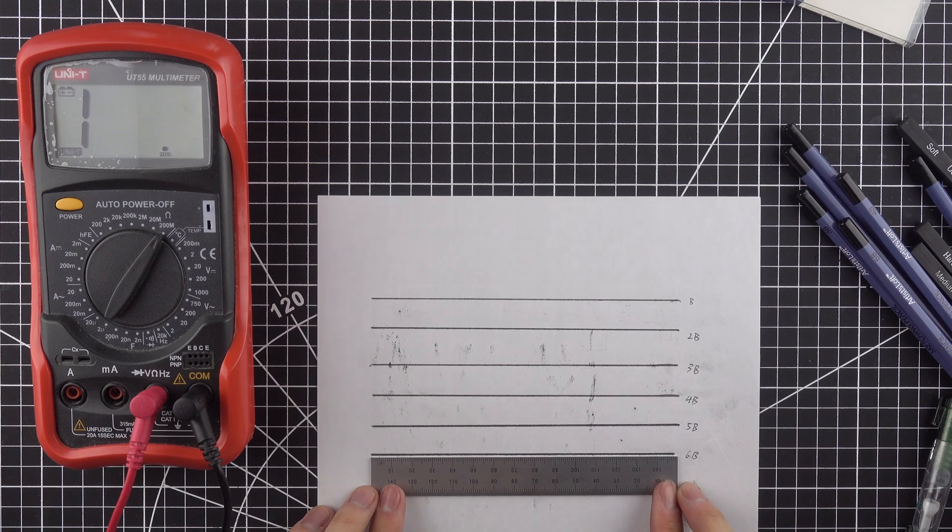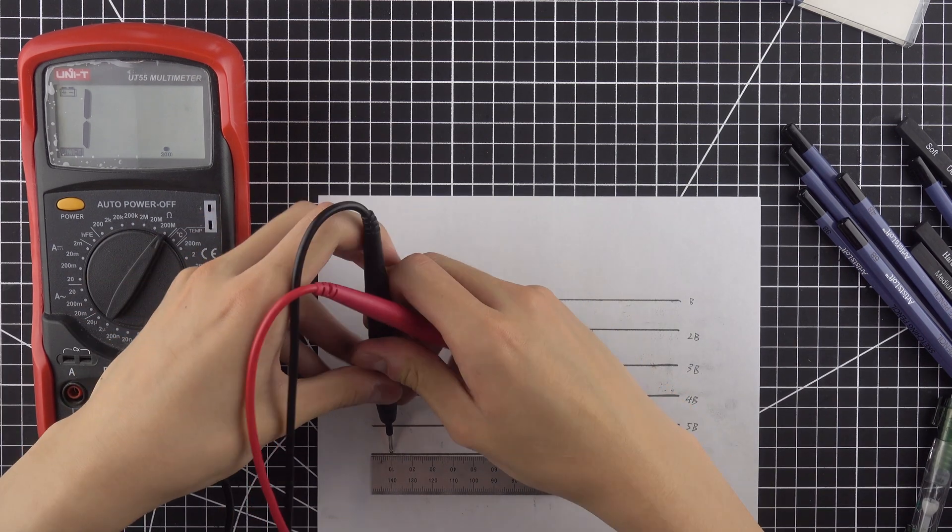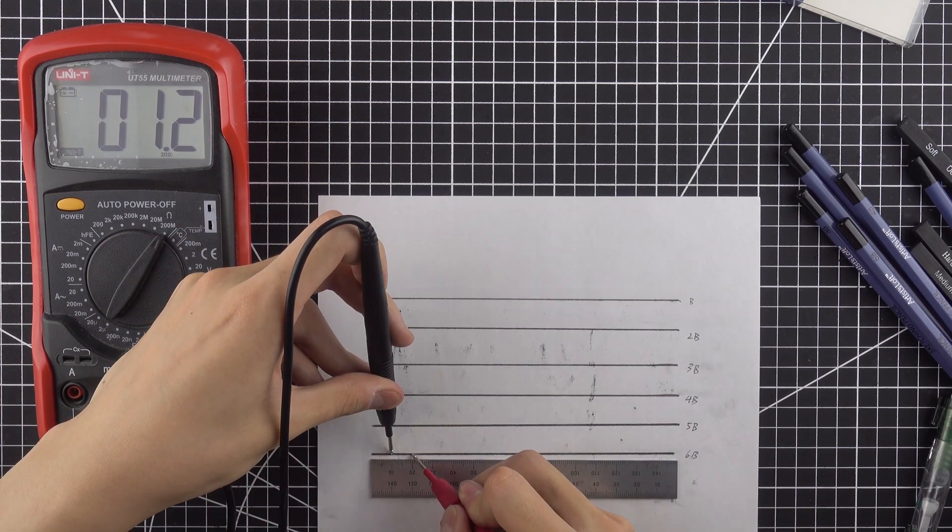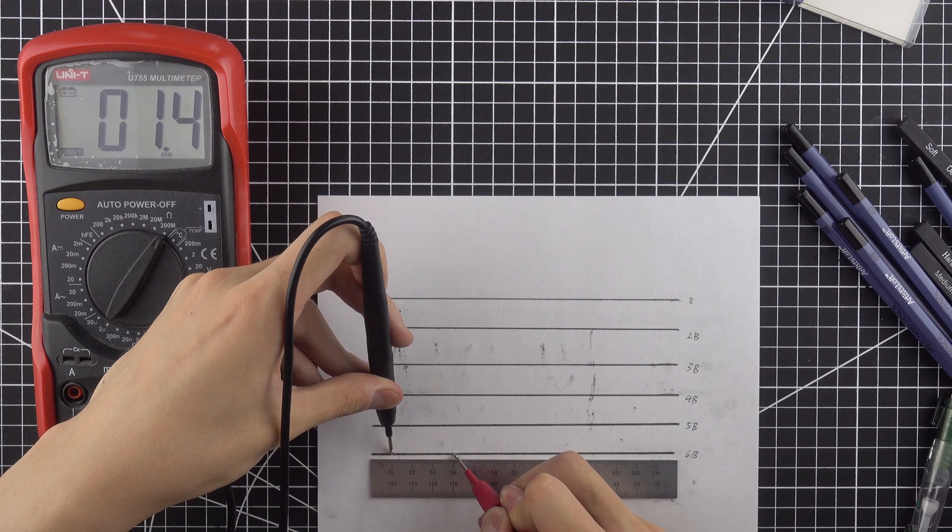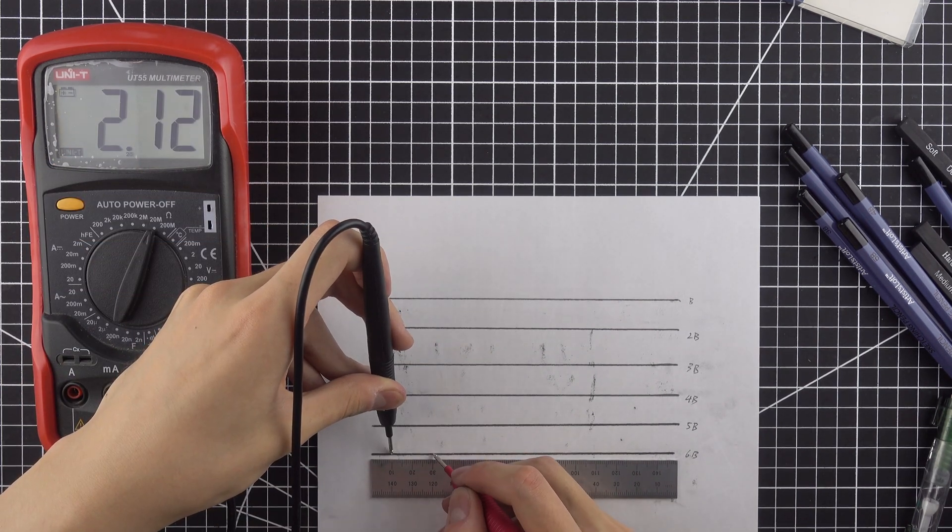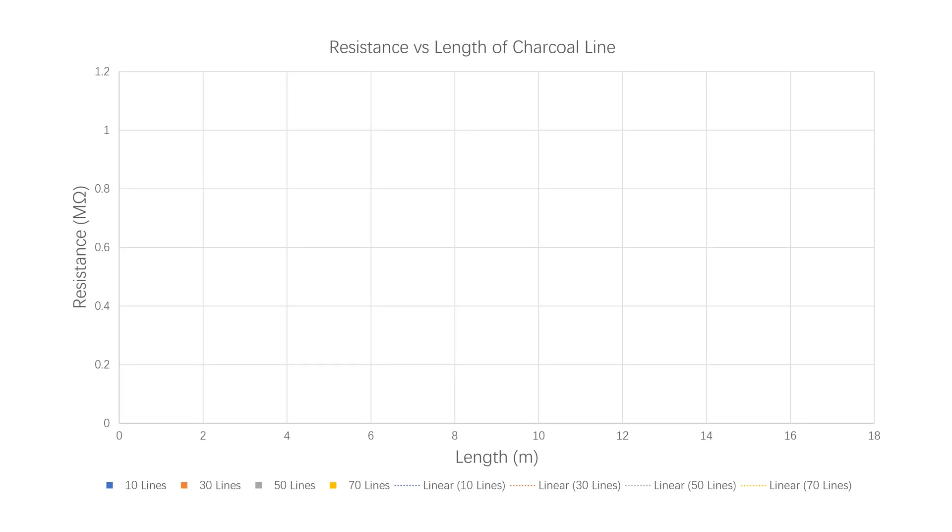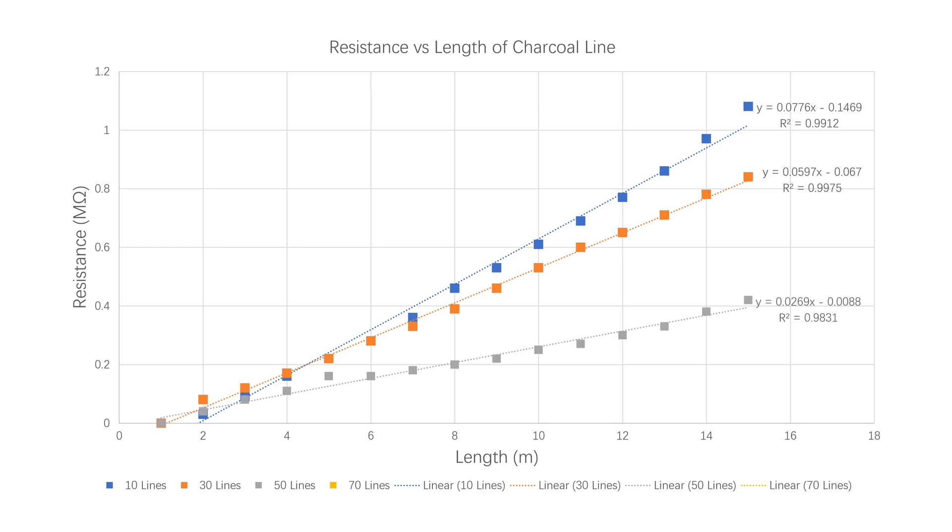The natural next step would be for me to test different numbers of lines. For this, I used the B pencil and drew 10, 30, 50, and 70 lines. Again, using the same method to test for resistivity, I arrived at this plot. Here we can see a pattern begins to emerge. The darker lines are noticeably more conductive than the lighter ones.